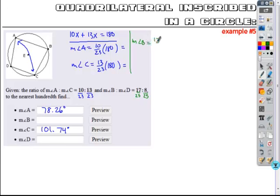So if I'm finding angle B, it's going to be 17 out of 25 of those parts. The whole thing, because they're opposite angles of an inscribed quadrilateral, is 180. And angle D is going to be the other 8 out of 25 of that same set.